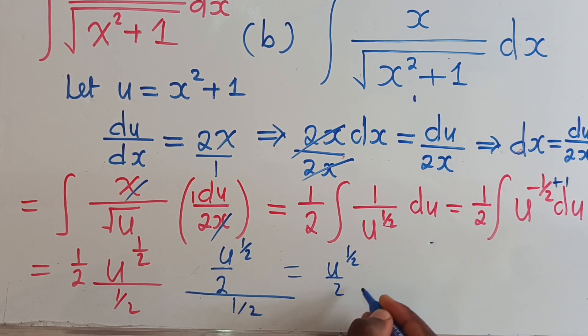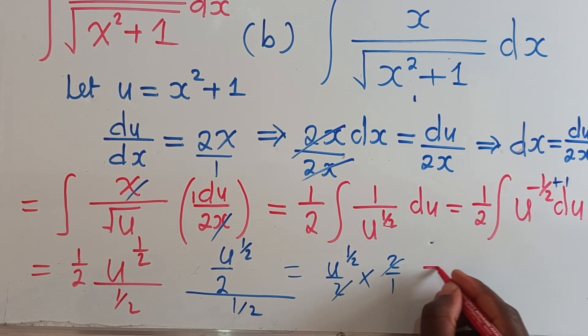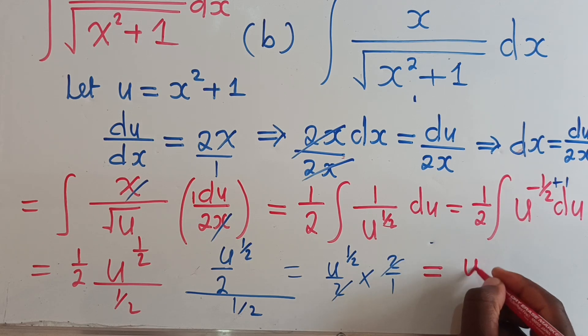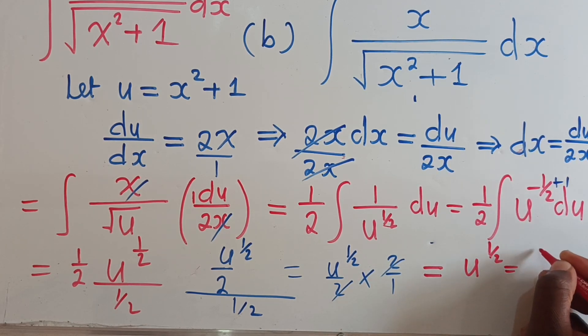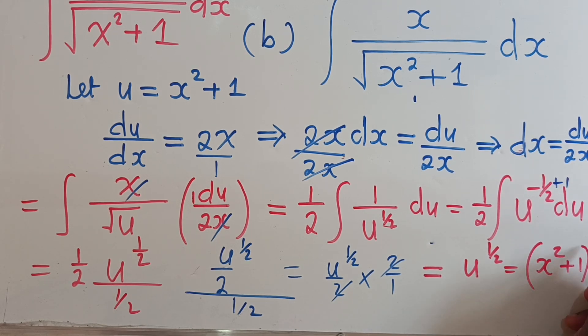So this will simply be equal to u power one-half over two times two over one. So this and this will cancel, we shall remain with u power one-half, which is equal to x² plus one, and the power there is one-half.